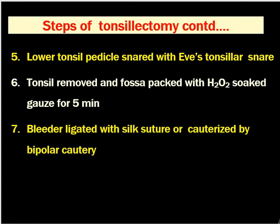The most common blood vessel that bleeds during tonsillectomy is the paratonsillar vein, followed by branches of the tonsillar artery. If there is any bleeder, it is ligated with silk suture or cauterized by bipolar coagulation. Nowadays we do not ligate the blood vessels — we mostly use bipolar electrocautery.